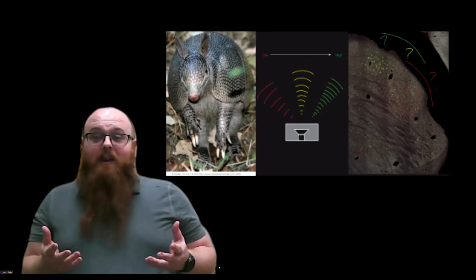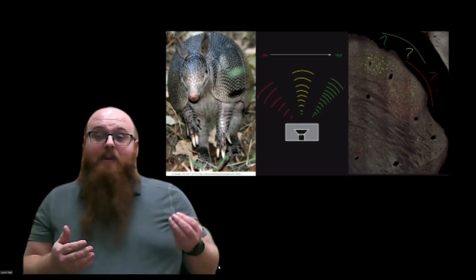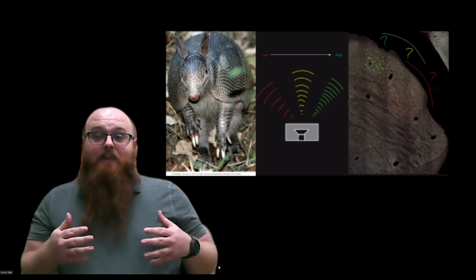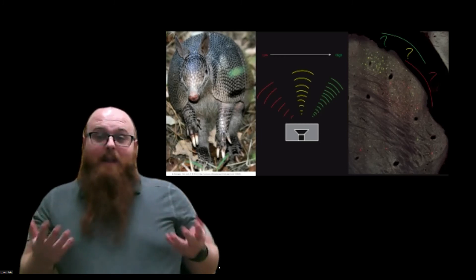In general, these findings in the armadillo indicate that there are some common organizational plans in auditory cortex for all placental mammals, and further work may reveal that this is the case for earlier-derived mammals, such as the platypi.